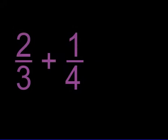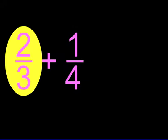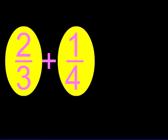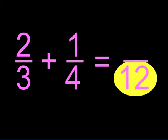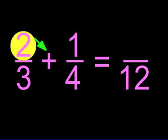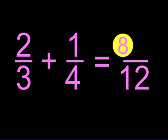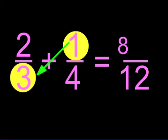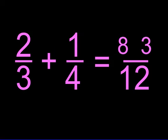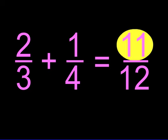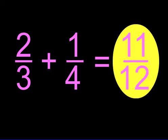Let's try another one. Two over three plus one over four. Three times four equals twelve for the denominator. Two times four equals eight. One times three equals three. Eight plus three equals eleven. So we have eleven over twelve.